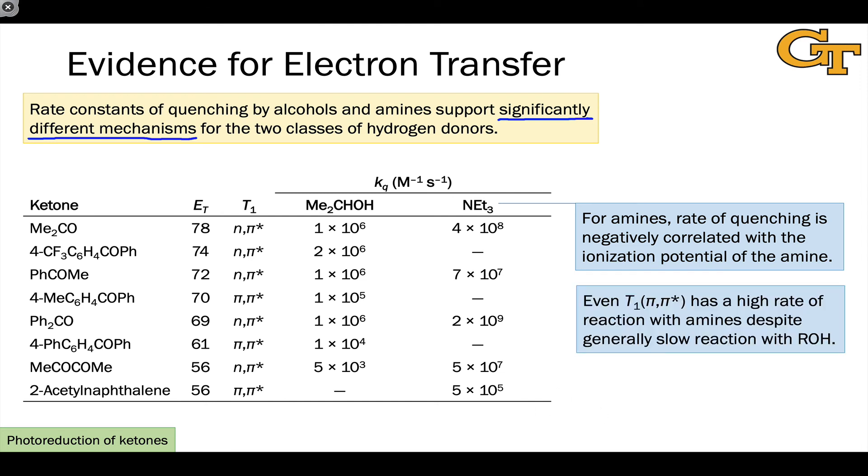Even the triplet pi-pi-star state has a high rate of reaction with amines despite generally slow reactions with ROH. A good example of that is this last case of 2-acetylnaphthalene, where the lowest energy triplet state is pi-pi-star in configuration. Its quenching by isopropyl alcohol is undetectable, whereas it still has a reasonably high rate constant of quenching by triethylamine, again supporting a qualitative difference in the mechanism of triethylamine relative to isopropyl alcohol.